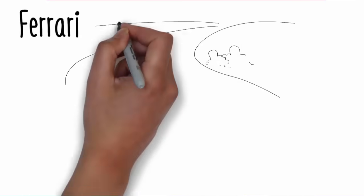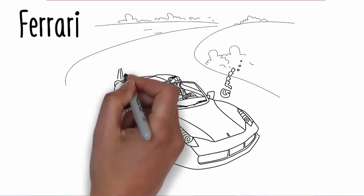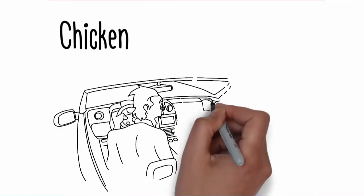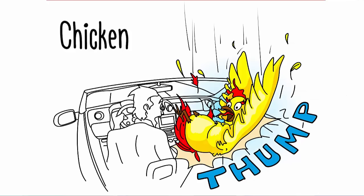Ferrari. Imagine you're driving a bright red Ferrari with the top down. The music is pumping above the throaty growl of the engine and your hair is blowing in the wind. Chicken. With a loud thump, a giant chicken lands in the seat next to you. It's the size of a person, enormous and yellow. It must have fallen out of the sky.